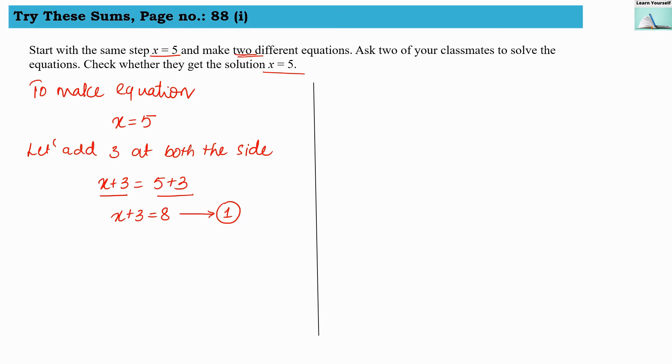Now let us make another equation. To make an equation, we have to use x equals 5. Now any operation we are doing - addition, subtraction, division, or multiplication - we have to do it at both sides. First I added something. Now when making the second equation, I am multiplying something.